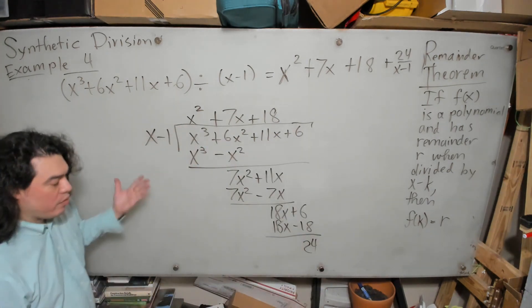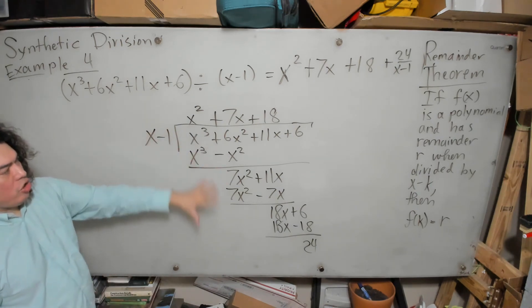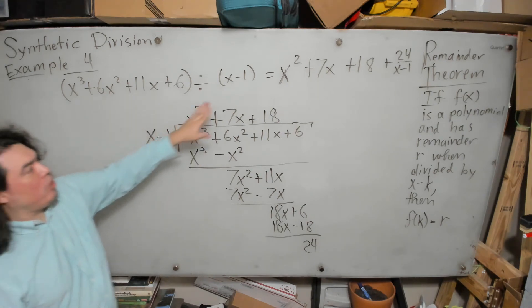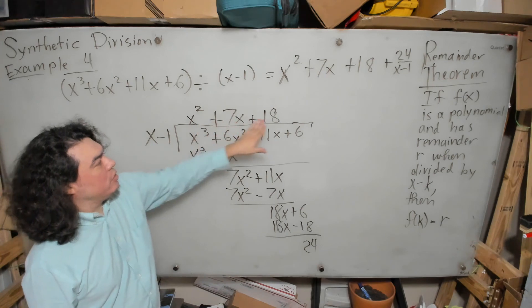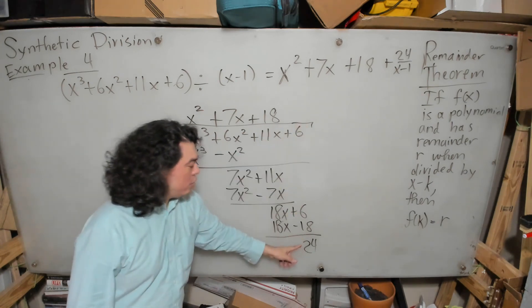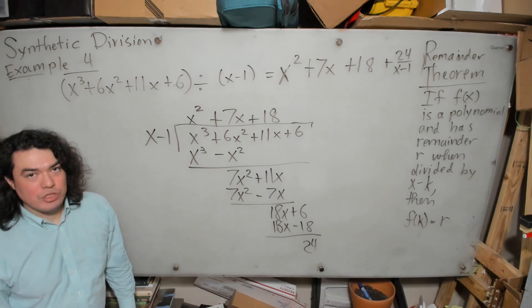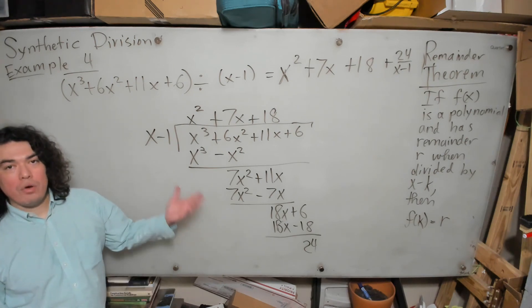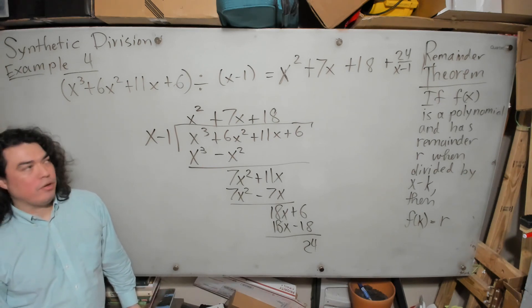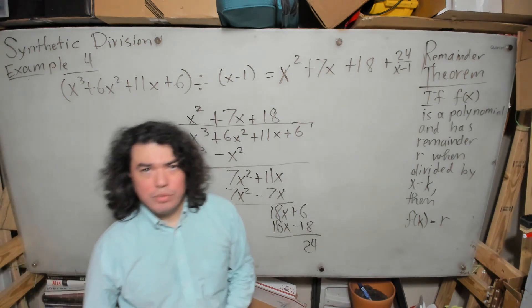This long division confirms exactly that this cubic polynomial divided by this linear polynomial gives the quotient x squared plus 7x plus 18 and remainder 24, just as we interpreted from the synthetic division result. Now we know how to interpret a synthetic division result that does not have a zero remainder. I hope you've enjoyed this example and I look forward to seeing you again soon — thank you so much.